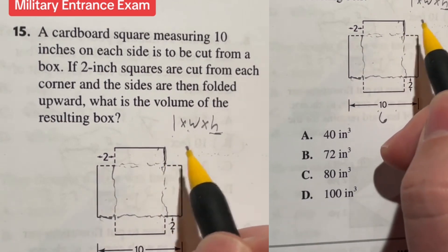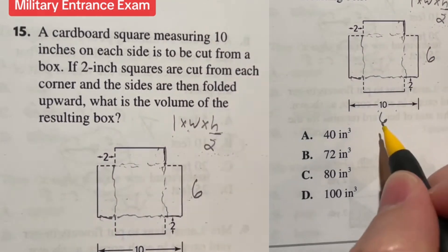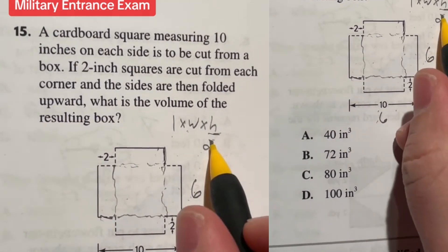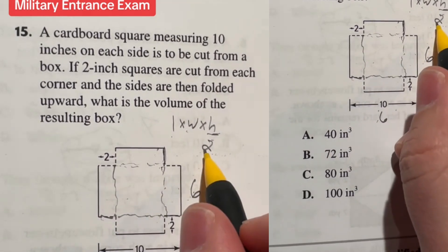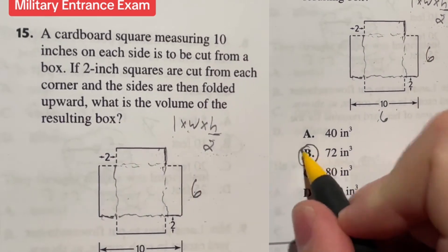So we have 6 times 6 times 2. Well 6 times 6 is 36 times 2 is going to give me 72 inches cubed which means our answer is B.